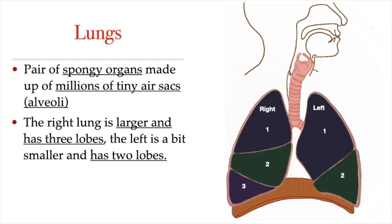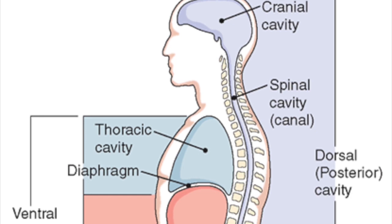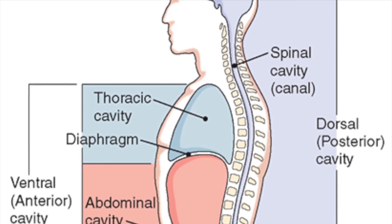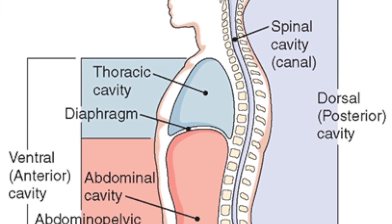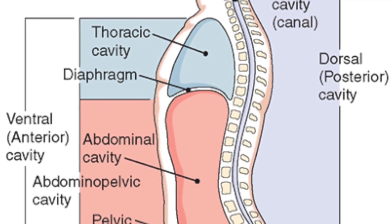The lungs themselves are divided into sections, or lobes. Although we have two lungs, they are not exact mirror images of each other. The right lung has three lobes and is slightly larger than the left lung, which has two lobes. The lungs are enclosed in the thoracic cavity and are protected by the ribcage. The thoracic cavity, also called the chest cavity, is the second largest hollow space in the body, the largest being the abdominal cavity, where we find most of the organs of the digestive system.